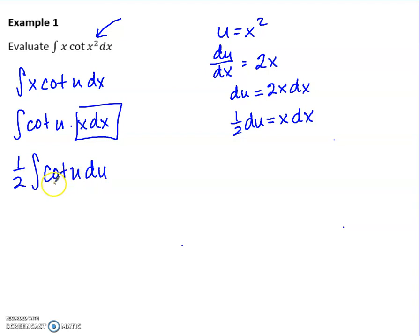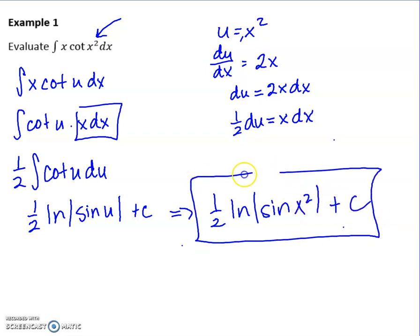This becomes then a 1 half, but I like to bring that out front. Cotangent du. Now I'm ready to go. From the previous page, you should remember the integral of cotangent is ln of sine of u plus c. And then last step, let's just put in that u, which was x squared, plus c. One down.